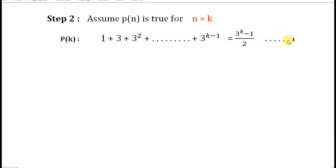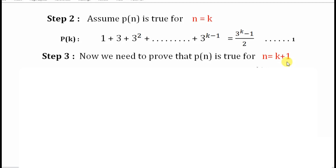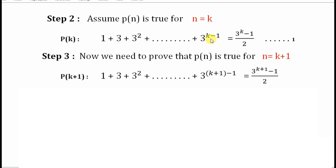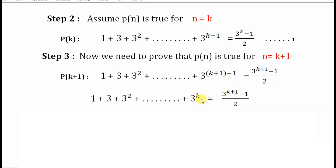In Step 3, we need to prove that P(n) is true for n equals k plus 1 also. So all the k's are replaced by k plus 1. The last term becomes 3 raised to k plus 1 minus 1, and the right hand side becomes 3 raised to k plus 1 minus 1, whole divided by 2. Since plus 1 minus 1 cancels, what remains on the right is 3 raised to k, minus 1, divided by 2.